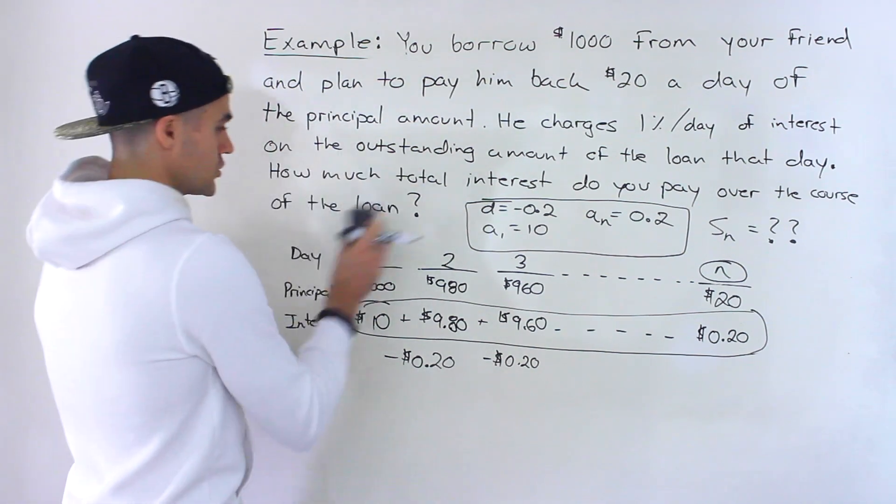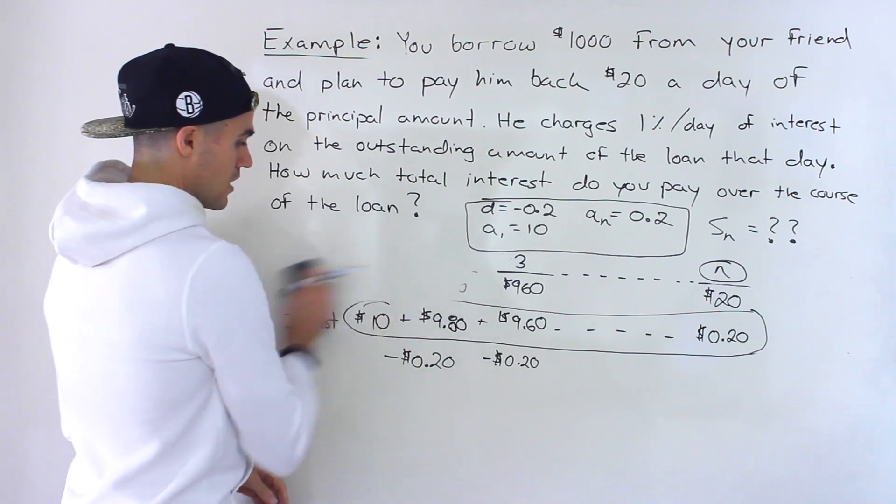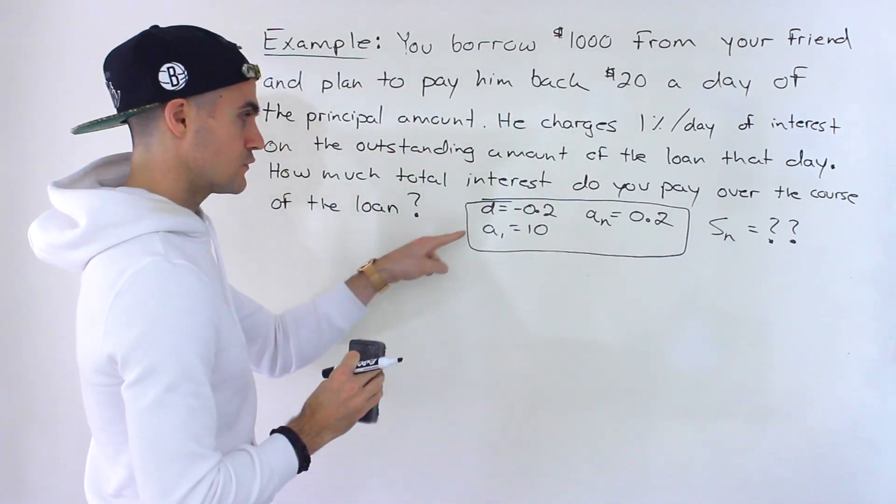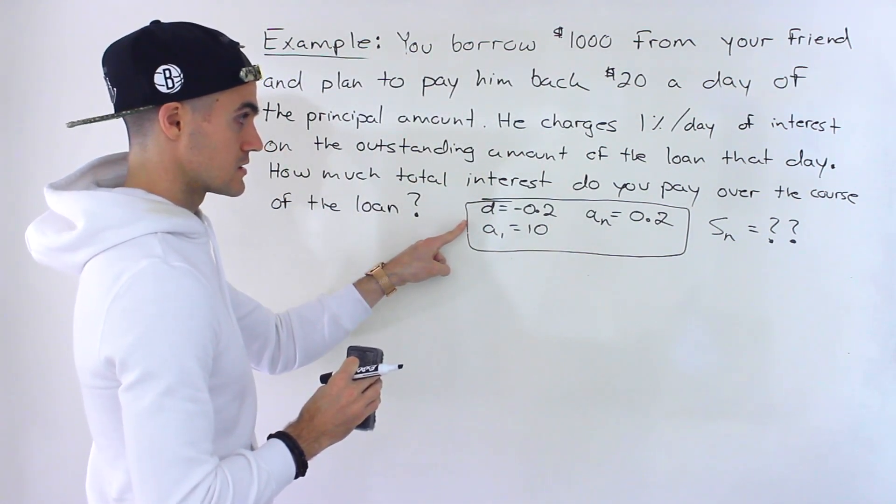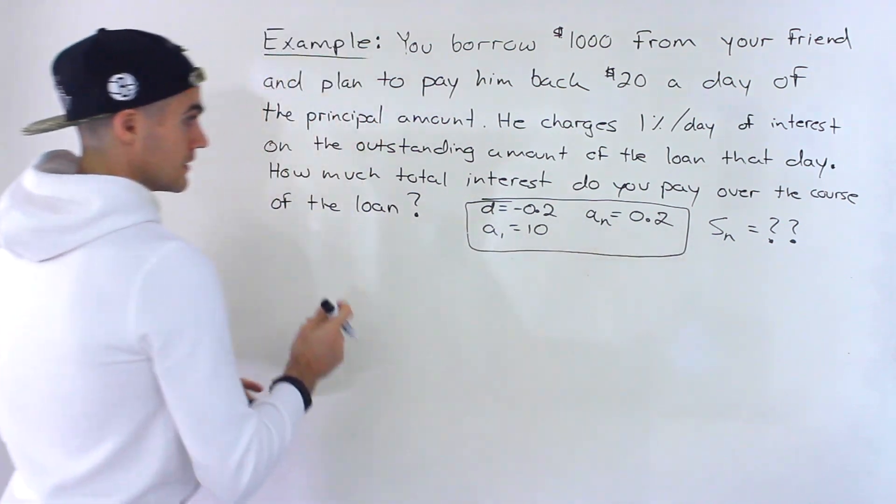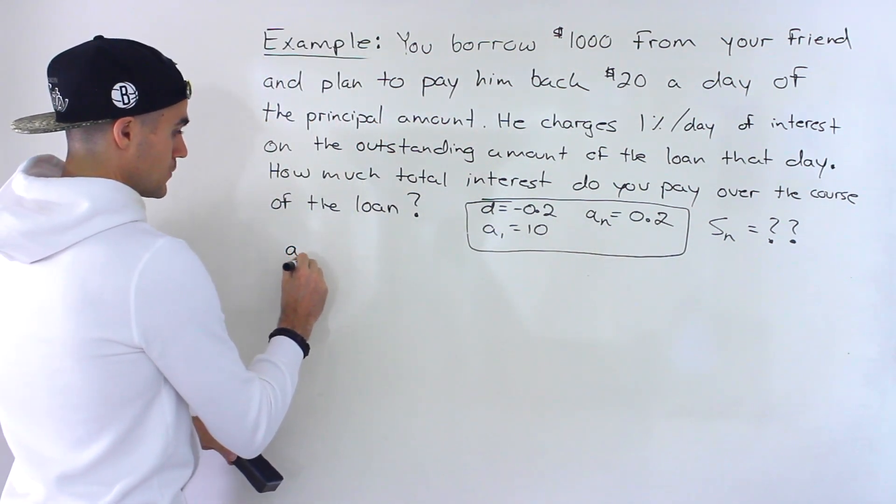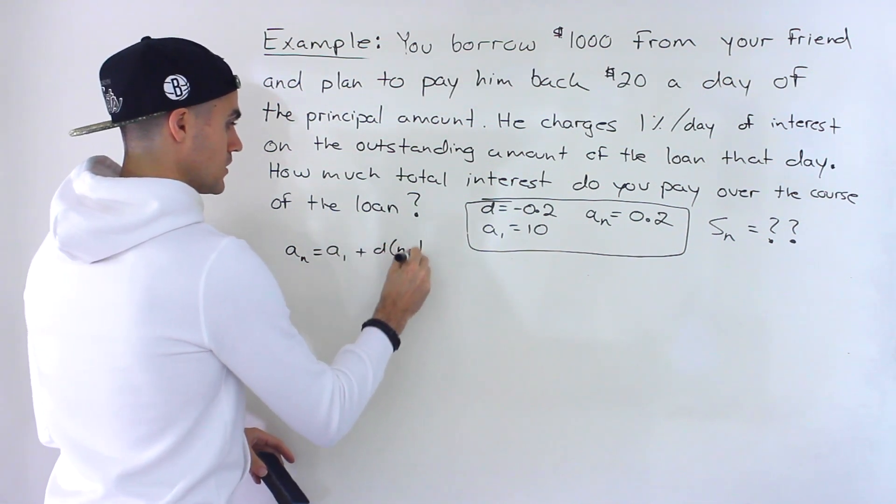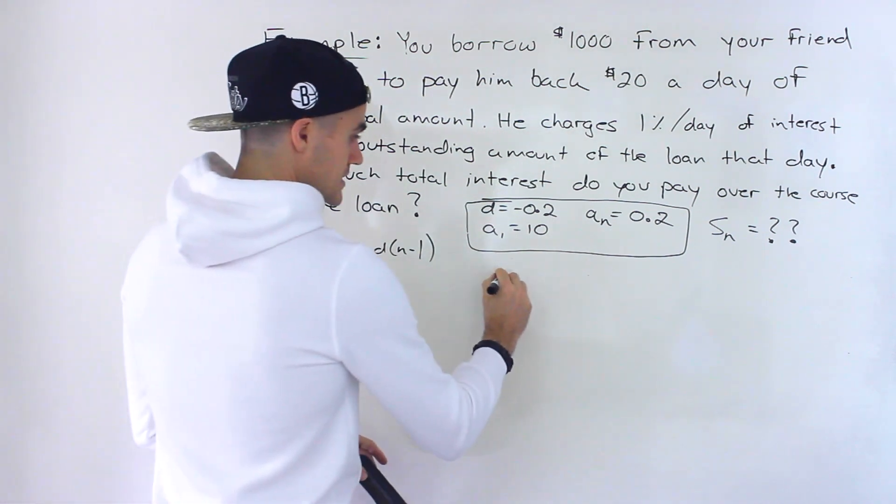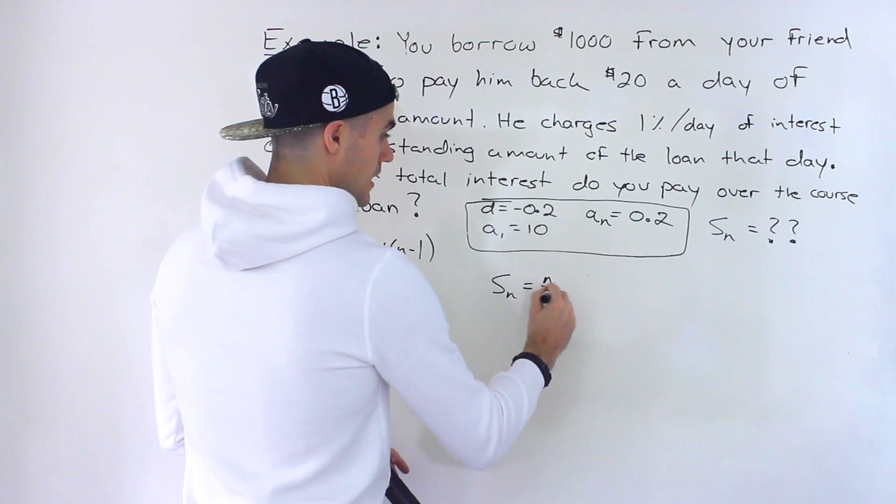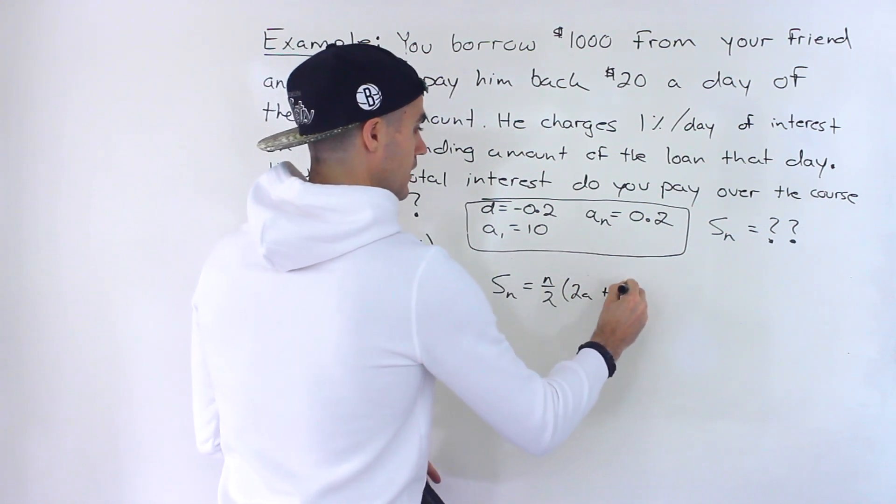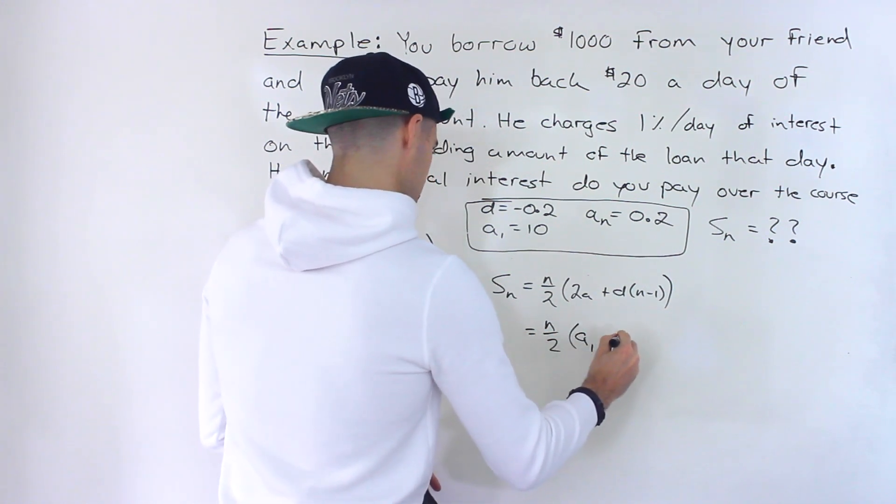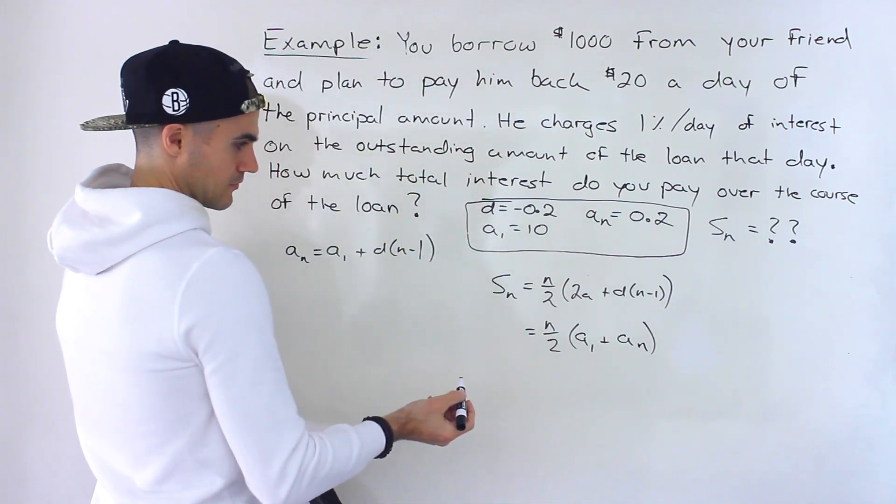So from here, we could pretty much just erase everything and just work with this over here. So if we were given this information about an arithmetic sequence, and we have to solve S of n. Now, since this is arithmetic, we know that the nth term is equal to the first term plus d(n-1). That's for the sequence. And then for a series, if we're going to add up all the terms, it's going to be n/2 times (2a + d(n-1)), or n/2 times (the first term plus the last term).